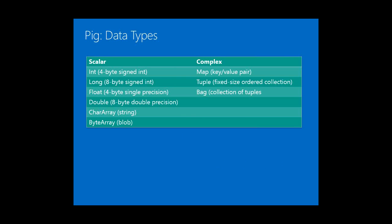Within PIG, we have six scalar data types — ones you're probably familiar with from the SQL Server environment. We have integer, long int (similar to big int in SQL Server), floating point, and double precision, which is just the higher-precision version.